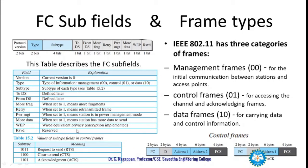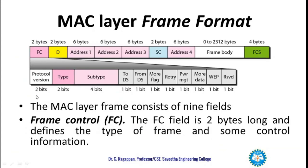WEP (Wired Equivalent Privacy) indicates that encryption is implemented in this frame; when enabled, this bit is set to 1. The reserved bit is kept as a control bit that can be used for some other purpose — it can sometimes denote a specific reserved frame for a specific purpose. These are all the subfields of the frame control field, which forms the first part of the MAC layer frame format.